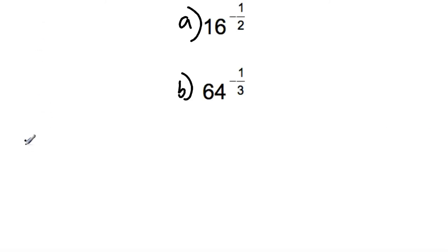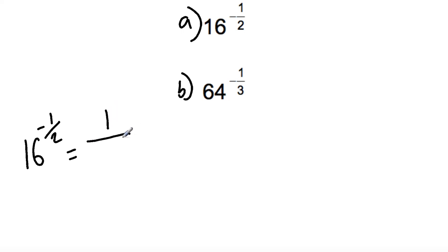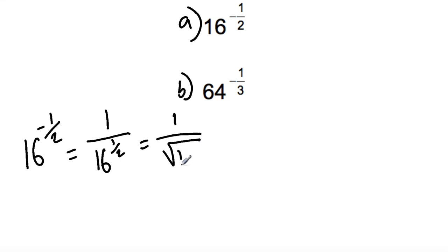Question 5a: 16 raised to the power of negative one half. Whenever the power is raised to a negative, the answer is always 1 over the base with the positive power. So we have 1 over 16 raised to the power of one half, which is the square root of 16. The square root of 16 is 4, so our answer is 1 over 4.